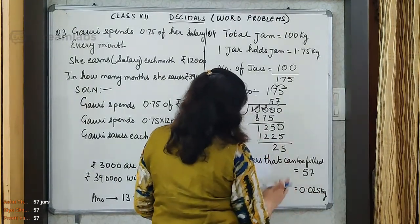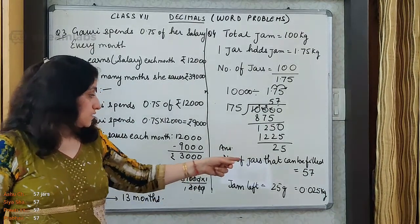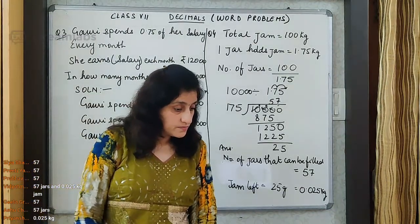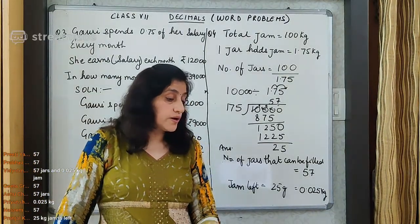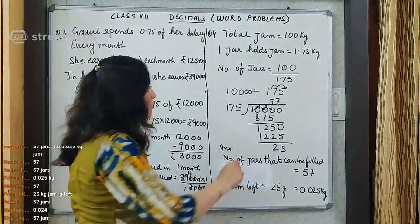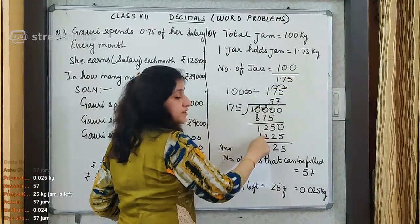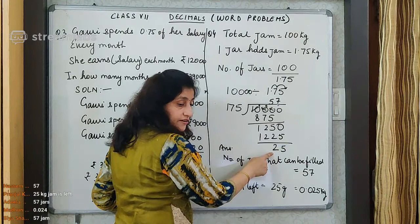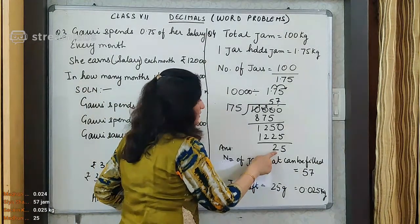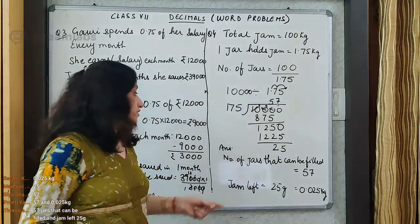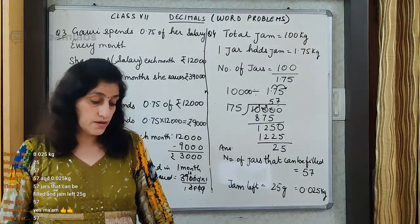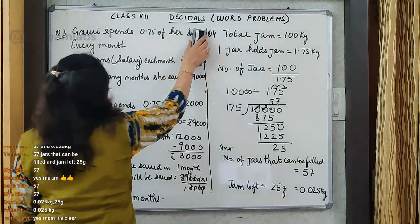This is 25 grams or 0.025 kg. I hope this question is also clear to you all. 25 kg is not left — this is 25 grams. Now we have brought this into the same units and then we are dividing. If 25 kg were left, we could fill more jars from that. Therefore this is grams and this is converted into kilogram. Is it clear, children?